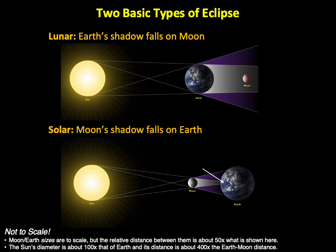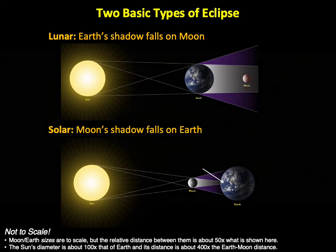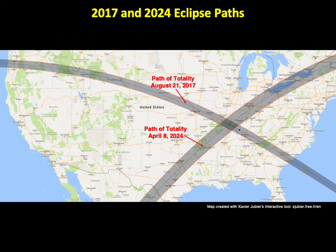In contrast, you can only see a total solar eclipse if you are somewhere along the narrow path of totality, and on average, a given location will have a total solar eclipse only about once every 375 years, though there is great variation from place to place. For example, this map shows the paths of the total solar eclipses of 2017 and 2024.